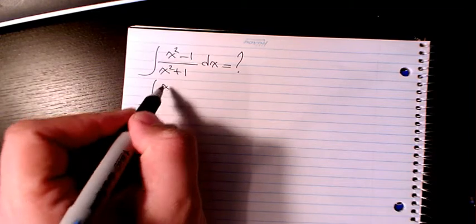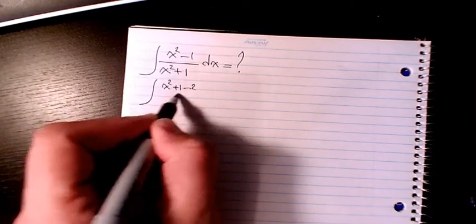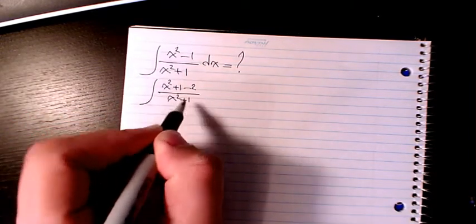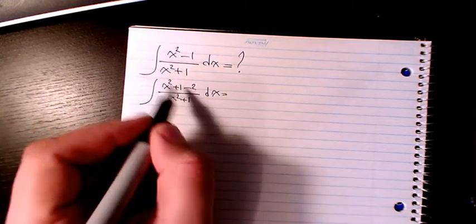I'm going to change this to x square plus 1 minus 2 divided by x square plus 1 dx. Then I separate it.